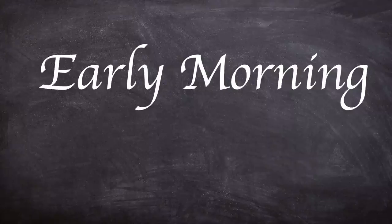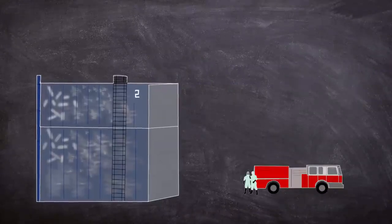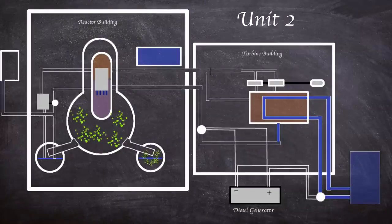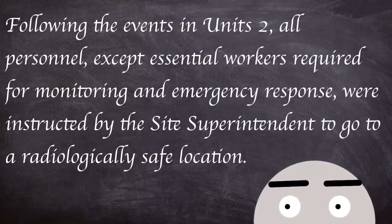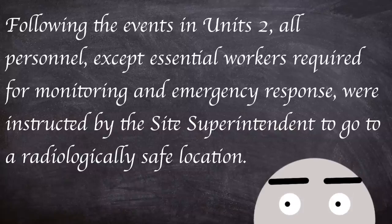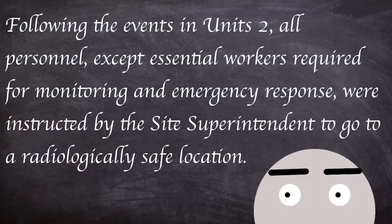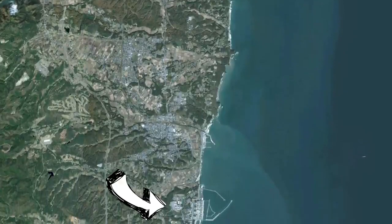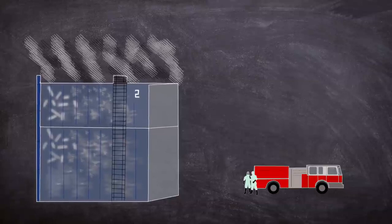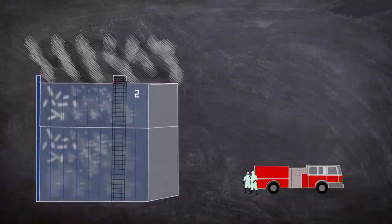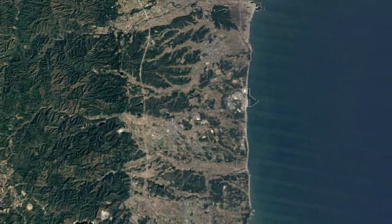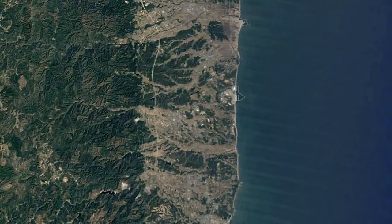In the early hours of the 15th of March, explosions were heard at units 2 and 4, with the top half of unit 4's building being damaged. A drop in pressure readings on the suppression chamber of unit 2 was seen, hinting the containment had been compromised, meaning uncontrolled release of radioactive isotopes. Following events in unit 2, all personnel except essential workers required for monitoring and emergency response were instructed by the site superintendent to go to a radiologically safe location. 650 people evacuated to Fukushima Daini nuclear power plant site approximately 12 kilometers away. White smoke or steam was seen coming from the top of unit 2's reactor building. A radiation measurement of 11.93 millisieverts an hour was taken at the main gate at 9 am. An order was issued at 11 am requiring all residents within a 30 kilometer radius to take shelter indoors.